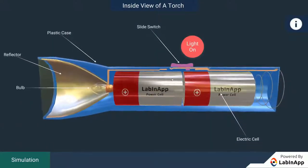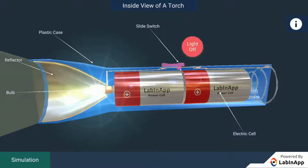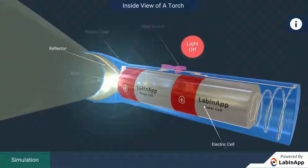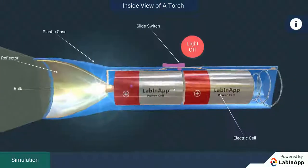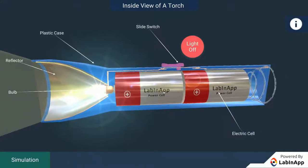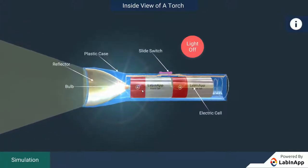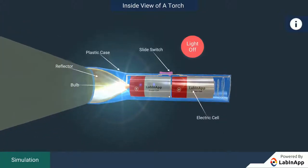Slide the switch and observe. We can see that the disconnected wire is now connected with the sliding switch and it allows the current to flow. The bulb glows and its light is further enhanced and directed by the reflector.